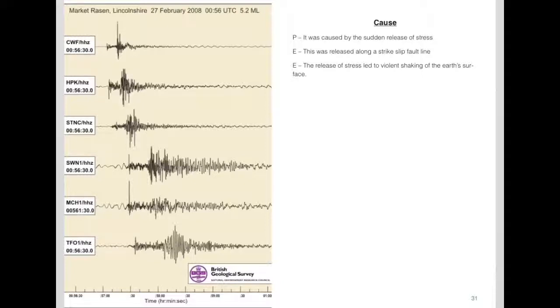In terms of the cause, here's your point, explain and expand answer which you need to have in your notes. It was caused by the sudden release of stress. This was released along a strike slip fault line. The release of stress led to violent shaking of the Earth's surface. Remember this did not occur at a plate boundary. It was along a strike slip fault line.